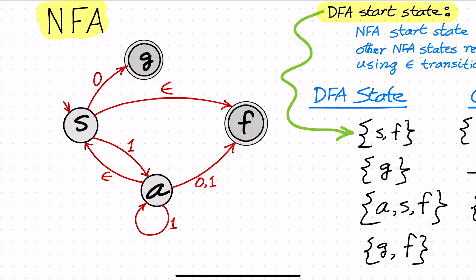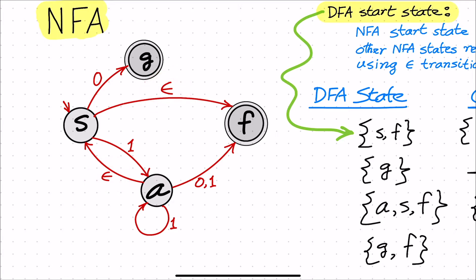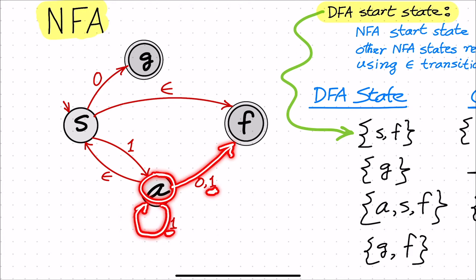This NFA bears the two hallmarks that distinguish NFAs from DFAs. Number one is epsilon or spontaneous transitions, and the second hallmark is that there can be multiple transitions out of a state for the same input symbol. For example, at state A with input symbol 1, you can go from A to F, and you can also loop back to A. So for the same input symbol, there are multiple transitions going out of A.